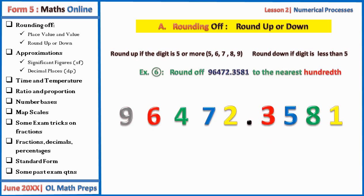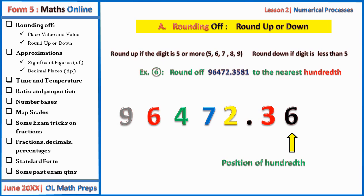Next, round this number to the nearest hundredth. The position of hundredths is five; it will affect it, so it becomes six. Since we want the nearest hundredth, anything after the hundredths position is wiped — because we are after the decimal point, unlike before the decimal point where we replace by zeros, after the decimal point we wipe them off.